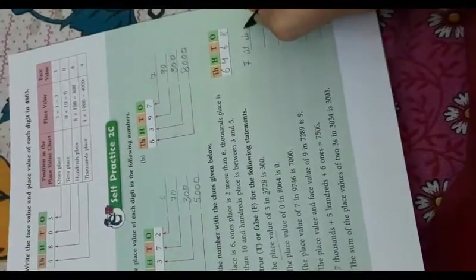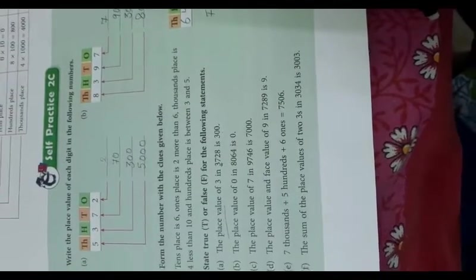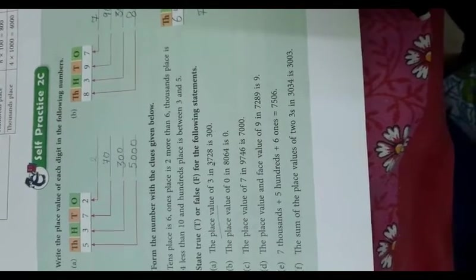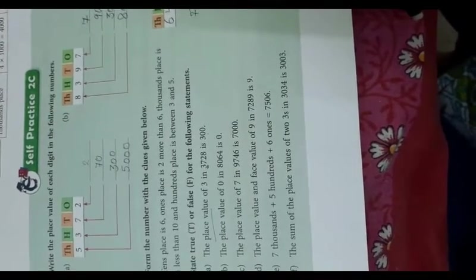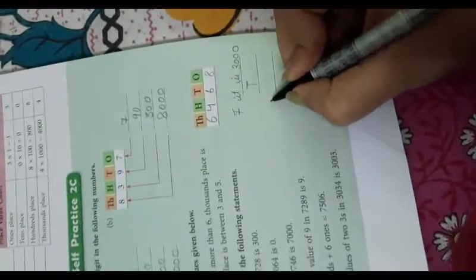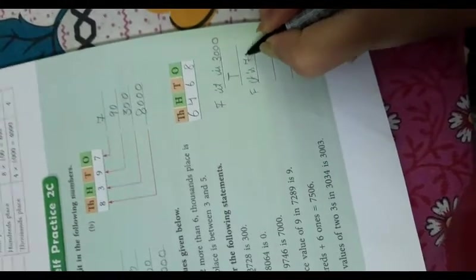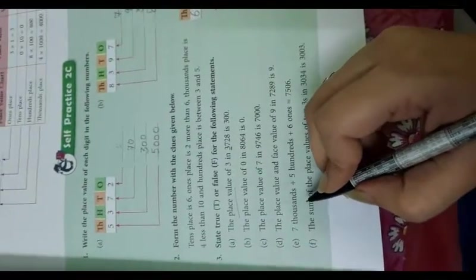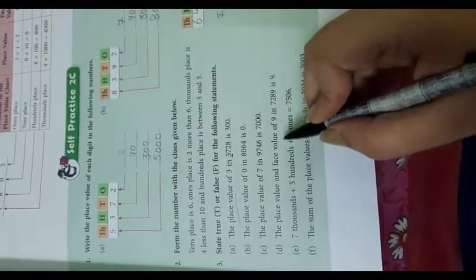The correct answer is three thousand. Next: the place value of zero in eight thousand sixty-four is zero — yes, the place value of zero is always zero, so that is true. Next: the place value of seven in nineteen thousand seven hundred forty-six is seven thousand — no, it will be seven hundred, so that is false.